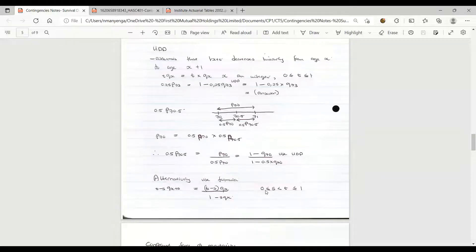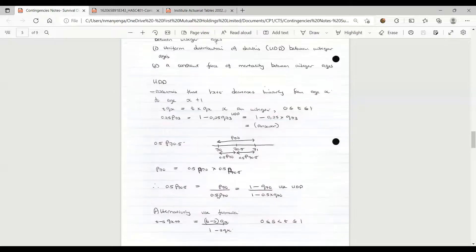Alternatively, you can just use this formula where it says tsqx+s equal to this. S and t should be between zero and one, and t should be greater than s for this formula to apply. For those interested in deriving this formula, they can always refer to materials, the CM1 materials or CT5 materials, but what is basically needed is just the application of this concept when you are given a particular question to answer.